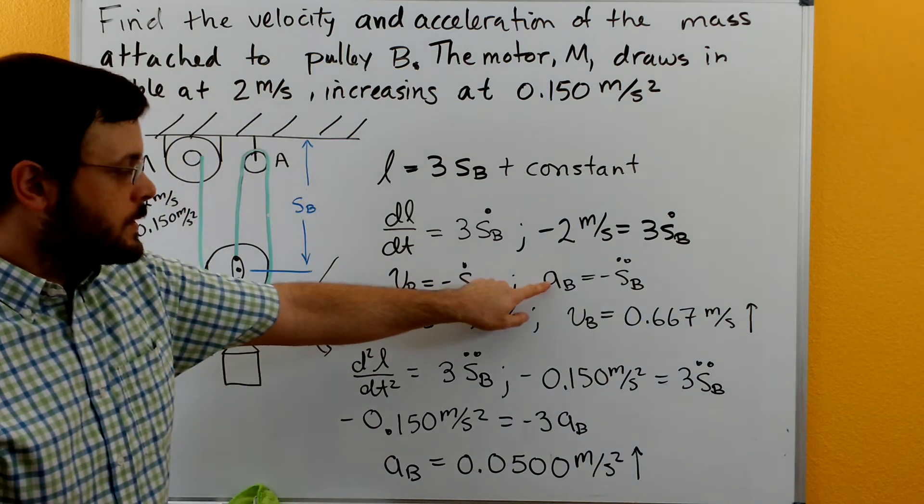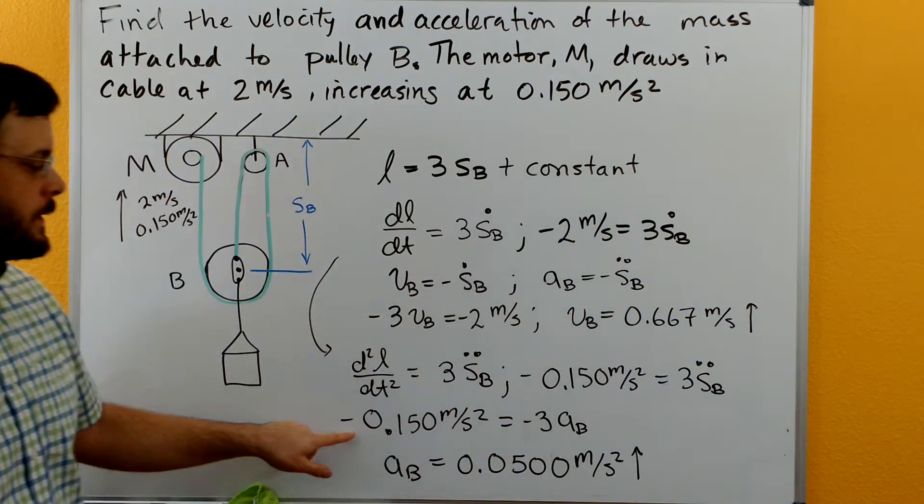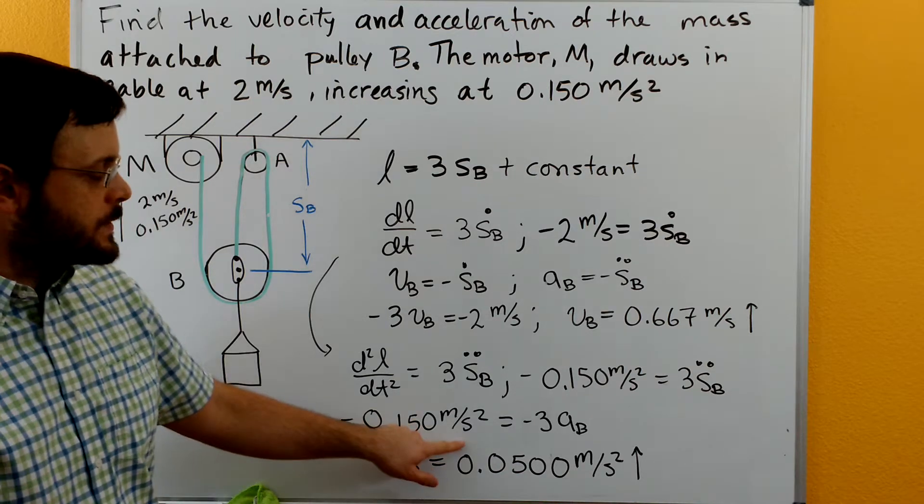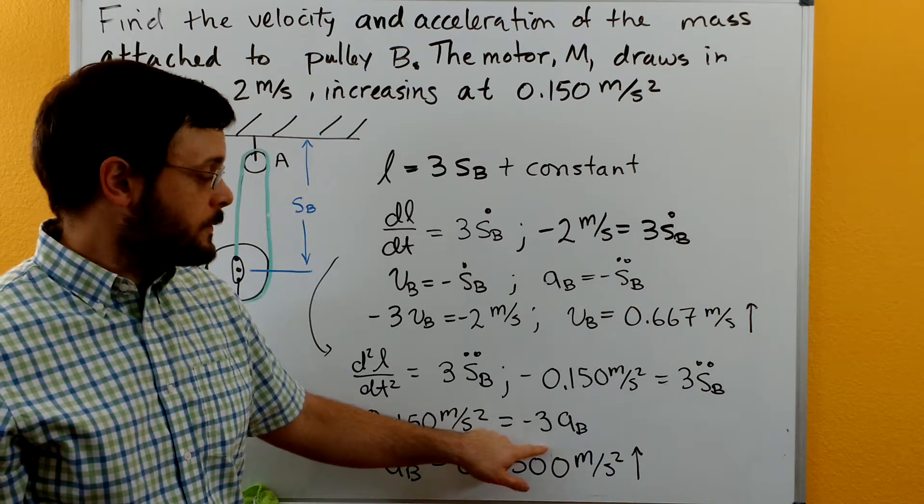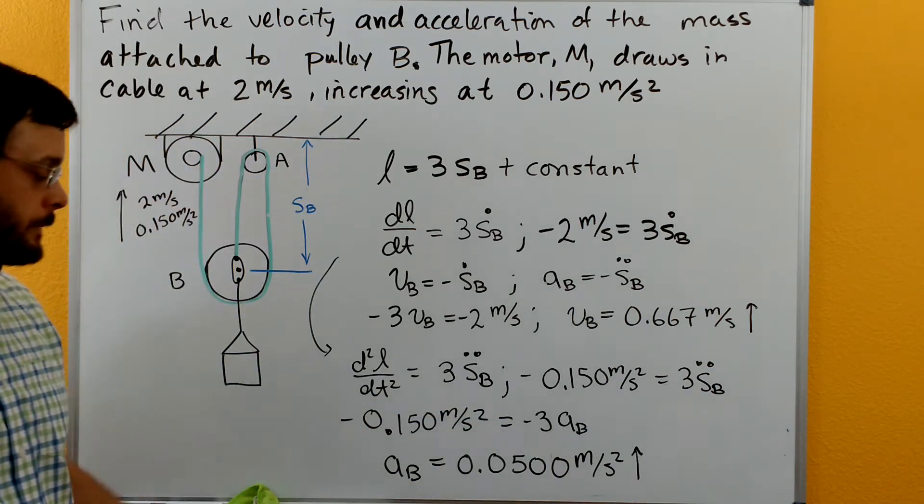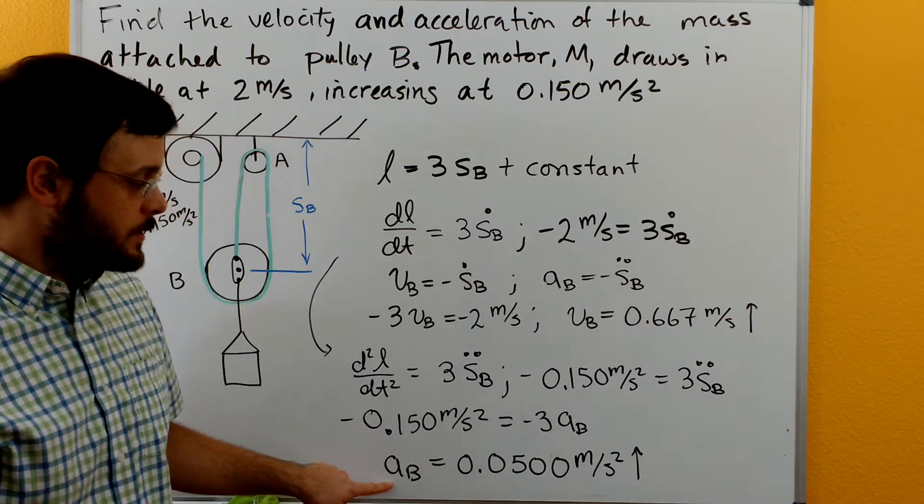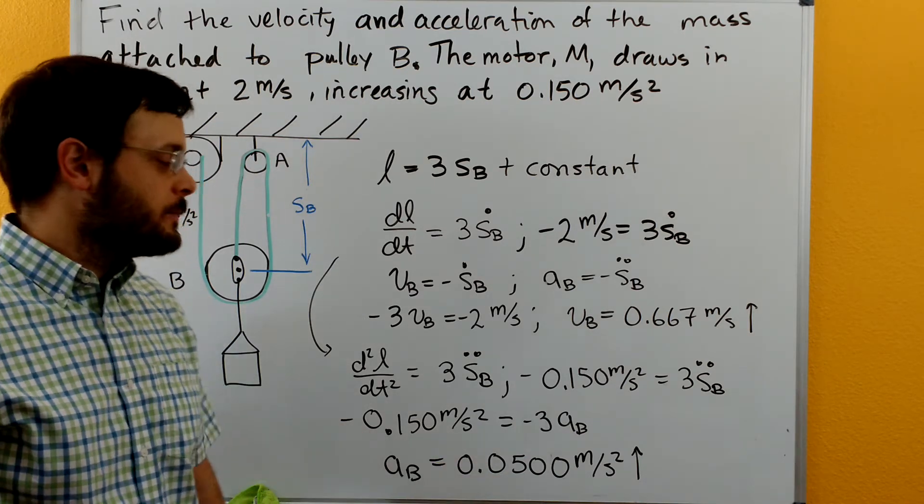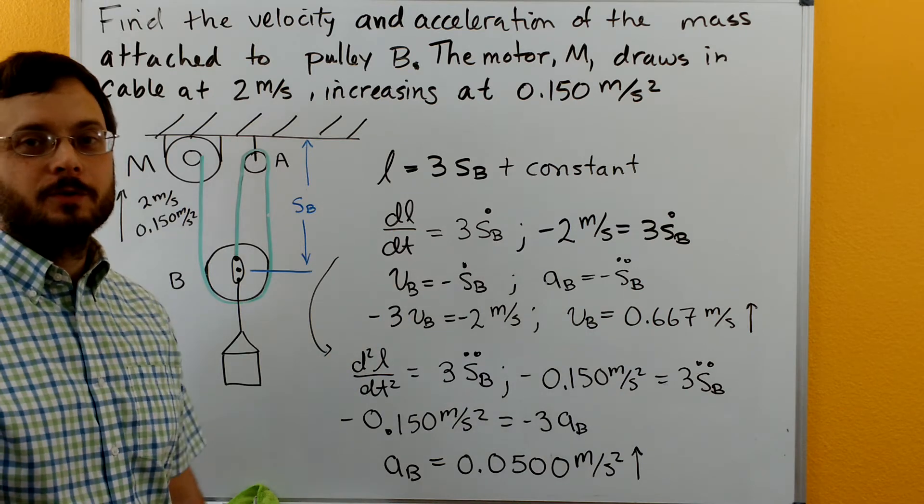Making this substitution, we have negative 0.150 m/s² equals negative three times the acceleration of B. Then we solve for the acceleration of B, and we get 0.05 m/s² in the positive Y direction.